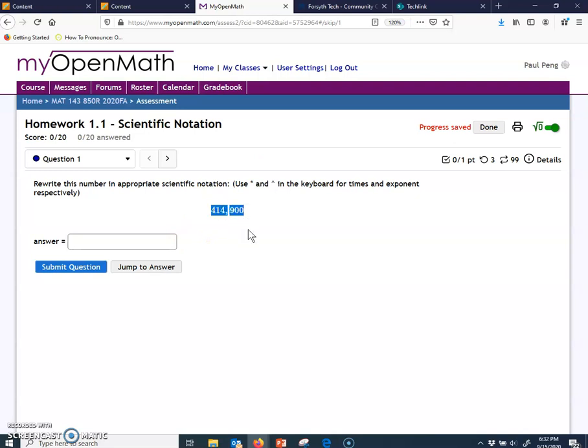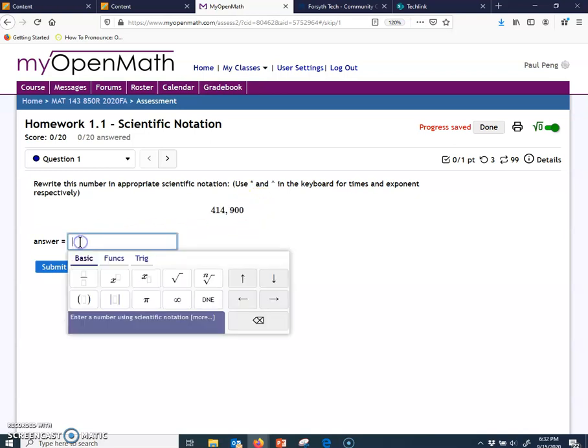How to type scientific notation. If we have a standard number here, of course you know the scientific notation should be 4.149 times 10 to the fifth power. So how to type that number? Go to the answer box, left click, it will jump out this math editor.